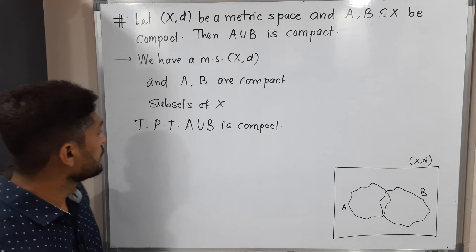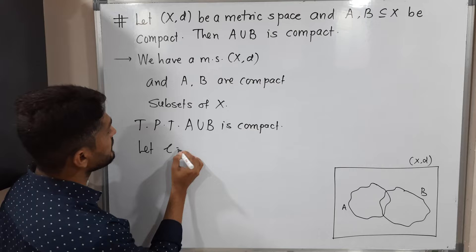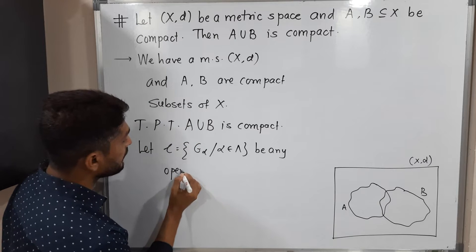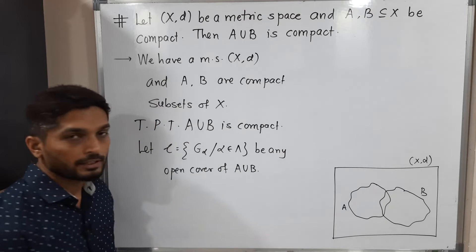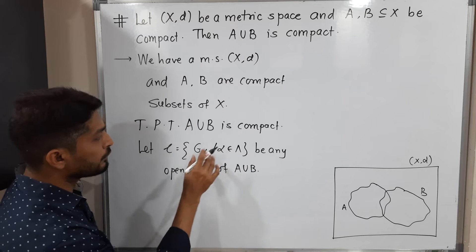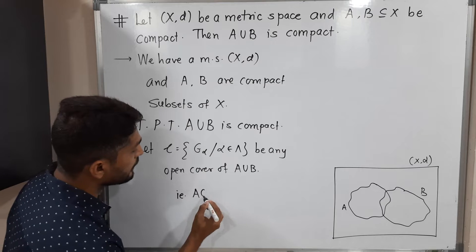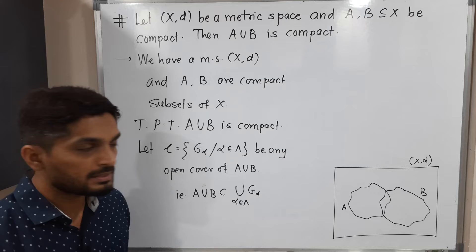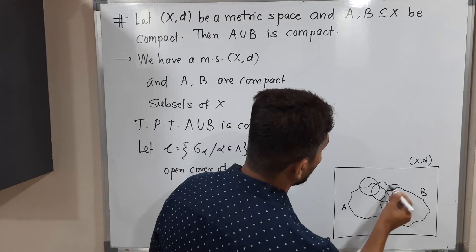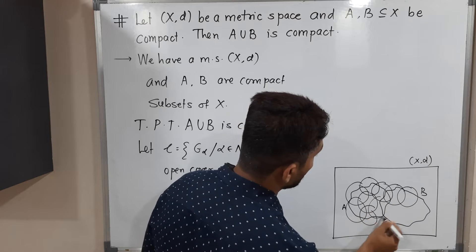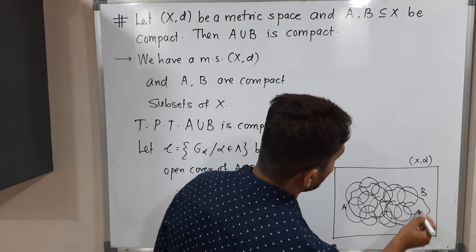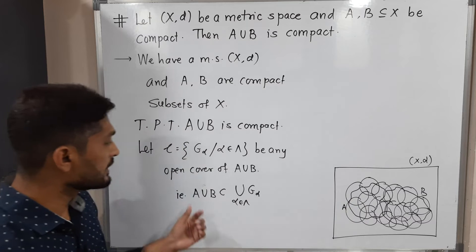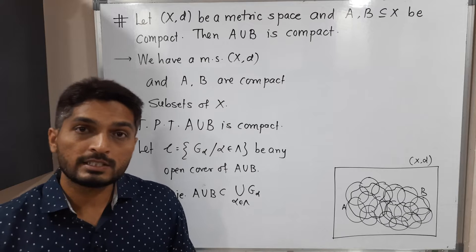Let script C = {G_α : α ∈ Λ} be any open cover of A∪B. Since it is an open cover, every set is open and the union of all G_α covers A∪B — that is, A∪B ⊆ ∪G_α for α ∈ Λ. This means these open sets G_α cover A∪B, and therefore they cover A as well as B.